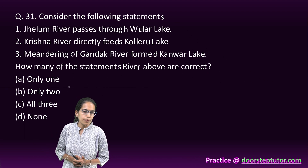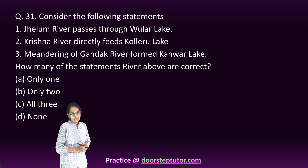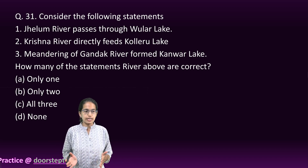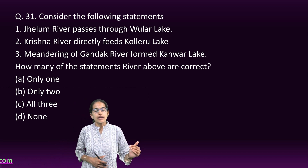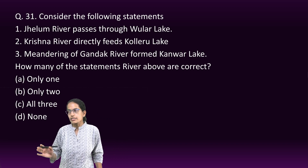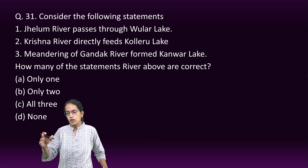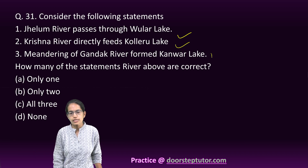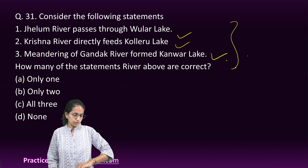The next question is about rivers and lakes. The Jhelum river passes through Wular Lake — correct. The Krishna river feeds Kolleru Lake — correct. The Gandak river, through its meandering process, forms Kanwar Lake, which is located in Begusarai, Bihar. So all three statements are correct — a straightforward geography question.